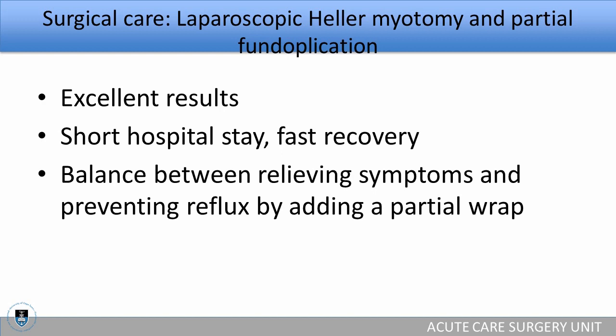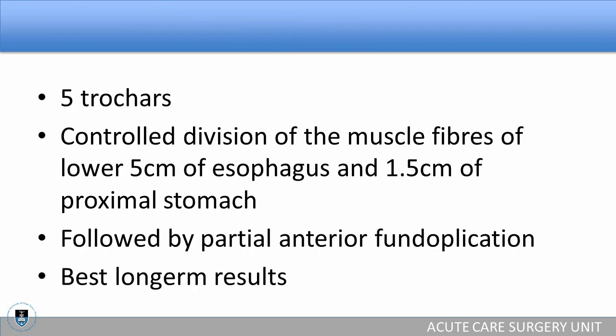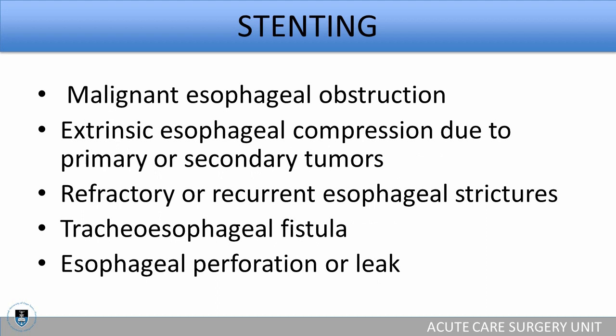The procedure of choice in the management of achalasia is surgical laparoscopic Heller myotomy and partial fundoplication, which has been shown to have excellent results. Patients generally have a very short hospital stay and a very fast recovery. What's very nice is that you can achieve the balance between relieving symptoms and preventing reflux by adding a partial wrap. Using five trocars, you perform controlled division of the muscle fibers of the lower 5 cm of the esophagus and 1.5 cm of the proximal stomach, followed by a partial anterior fundoplication — this has been shown to have the best long-term results of all three treatment options.